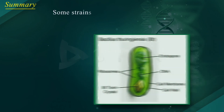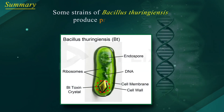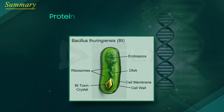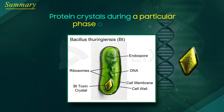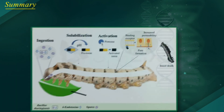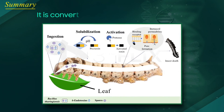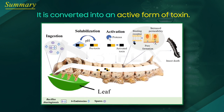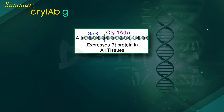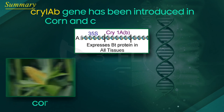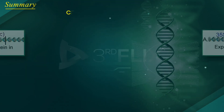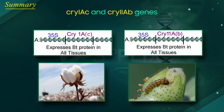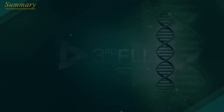Summary: Some strains of Bacillus thuringiensis produce proteins called BT toxin that kill certain insects. Bacillus thuringiensis forms protein crystals during a particular phase of their growth. Once an insect ingests the inactive toxin, it is converted into an active form due to the alkaline pH of the gut, which solubilizes the crystals. CRY1AB gene has been introduced in corn to control corn borer, and CRY1AC and CRY11AB genes have been incorporated in cotton to control cotton bollworms.